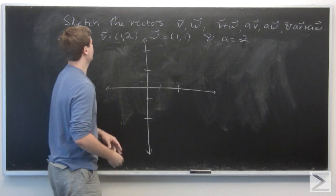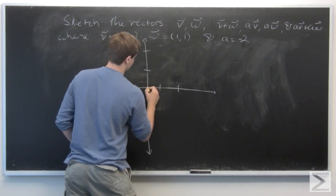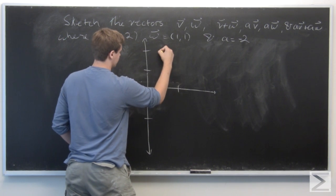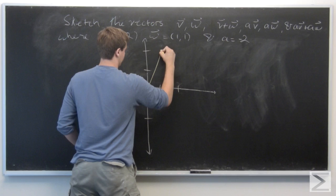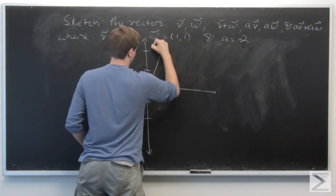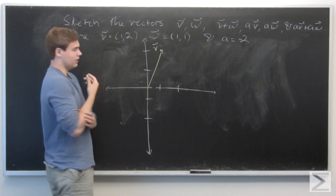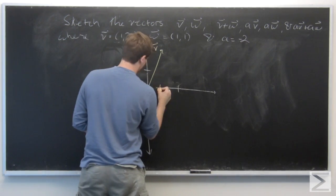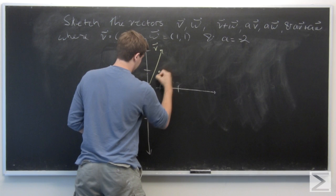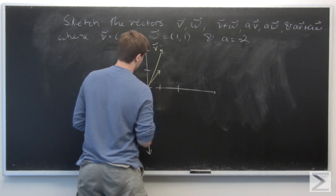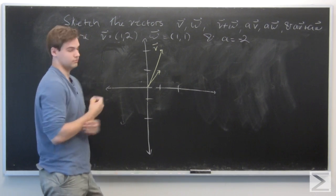So using a different color, we go over 1, up 2. That's v. And then going over 1 and up 1, this is w.